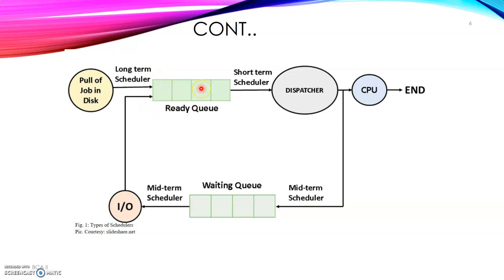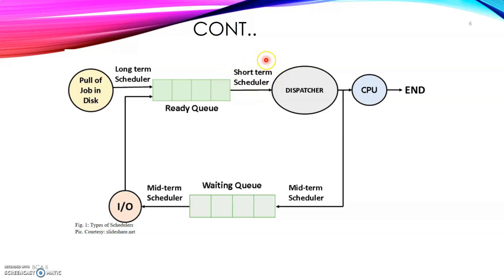The CPU scheduler selects processes which are ready to execute from the ready queue. Through this ready queue, the short-term scheduler decides which process is going to be executed by the CPU — which process will execute first and which comes after. Whenever the CPU becomes idle, the operating system must select one of the processes in the ready queue, and this selection is carried out by the short-term scheduler, also known as the CPU scheduler.